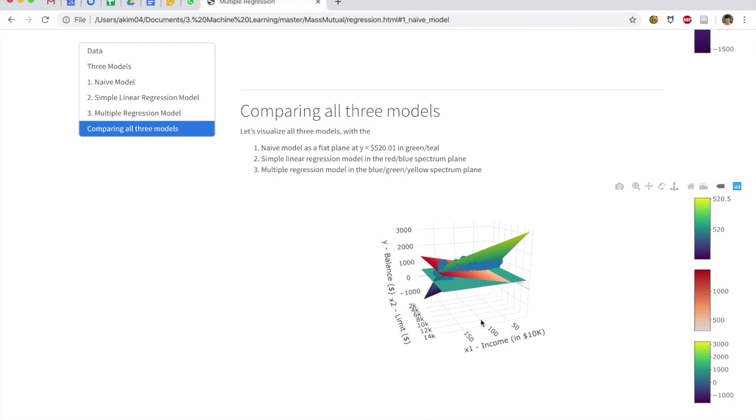Next, in red, the red plane corresponds to the simple linear regression model where we don't care about an individual's credit limit. The plane only changes for different values of income. So this thing right here is a flat plane—well, not a flat plane—but a plane whose values only change along this axis.